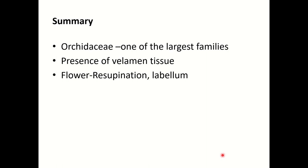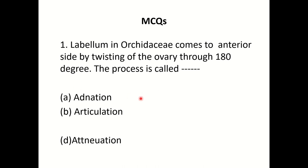So in a nutshell, what did we learn today? We have learnt that Orchidaceae is one of the largest families, widely distributed all throughout the globe. We have learnt about the presence of velamen tissue. In the flower, we have come across two important features: labellum or lip, and resupination — that twist of 180 degrees.